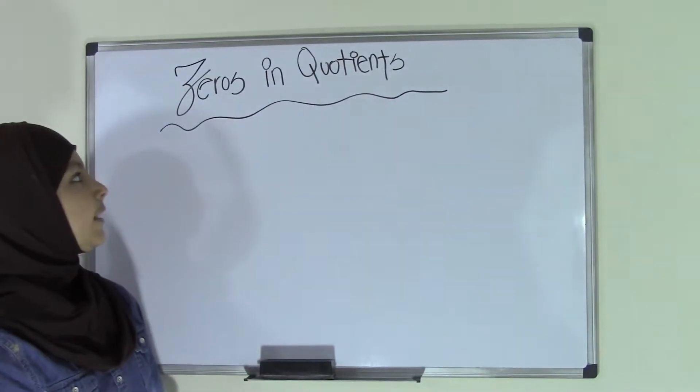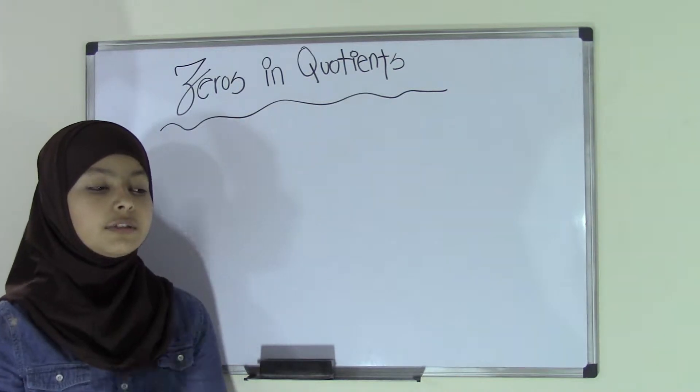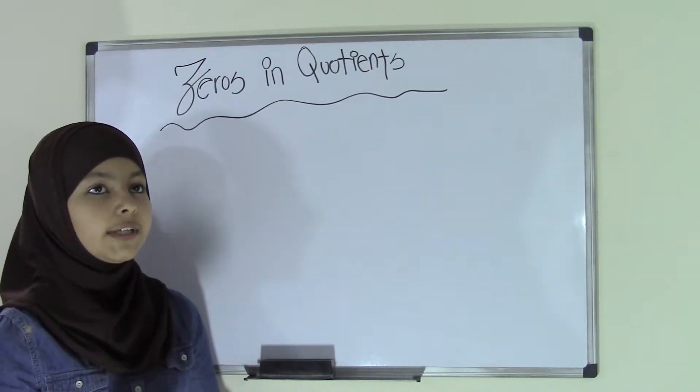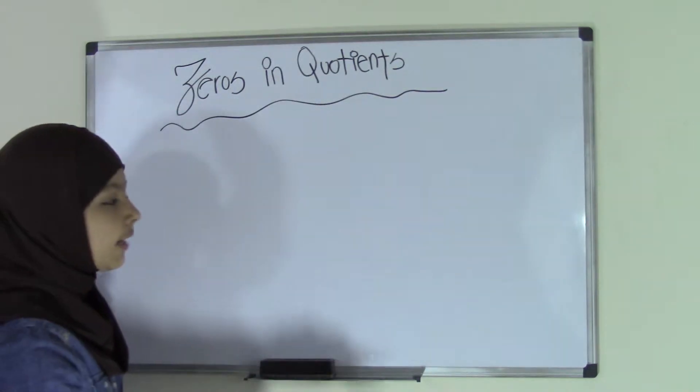Hey guys, today we'll be learning how to handle zeros in quotients. Now when I say zeros in quotients, that means the amount of zeros in the dividend that you will have to handle. So let's just take a look at an example.